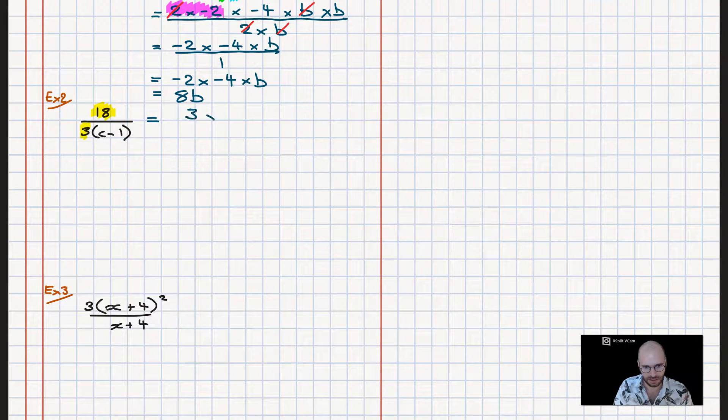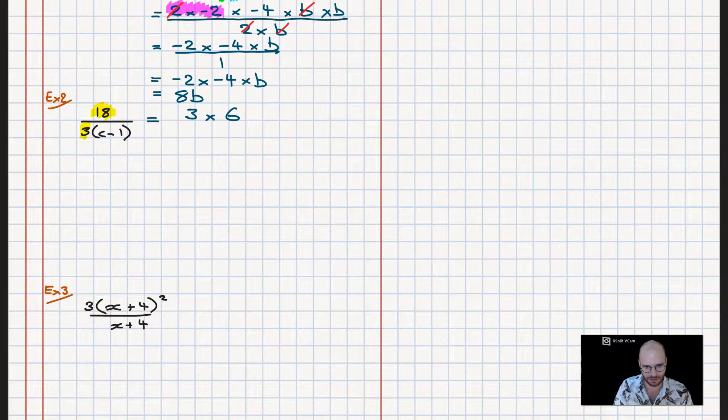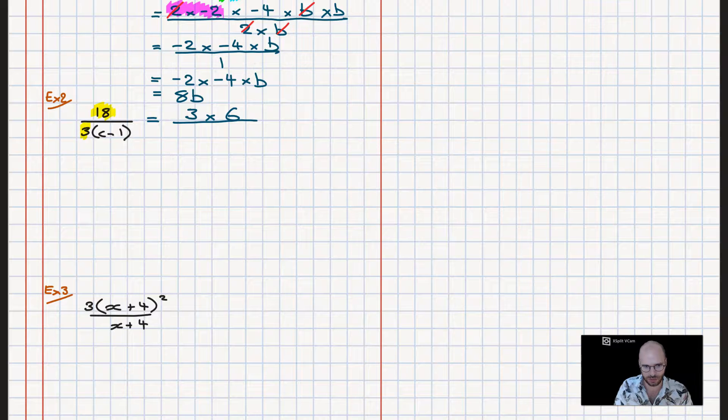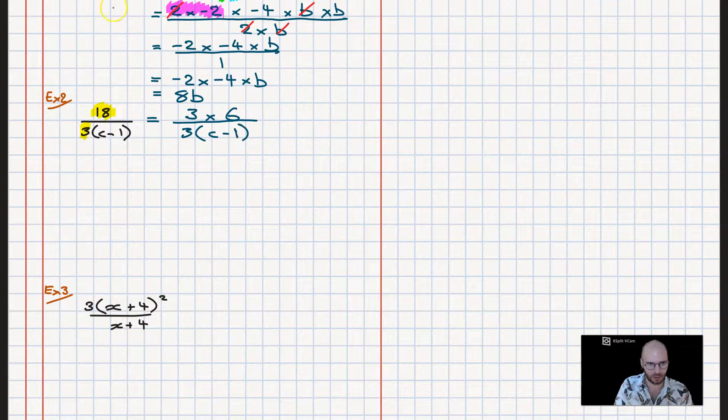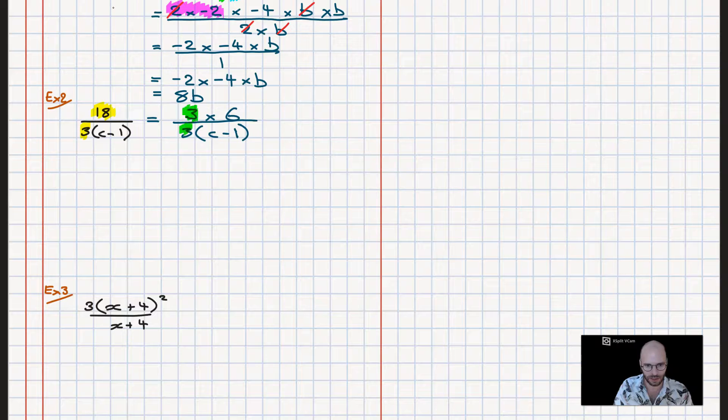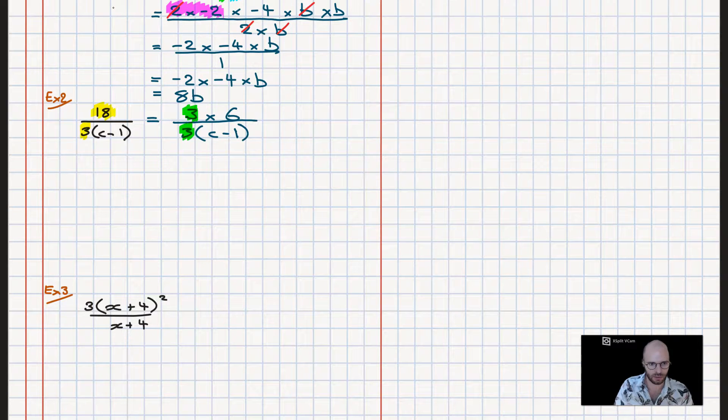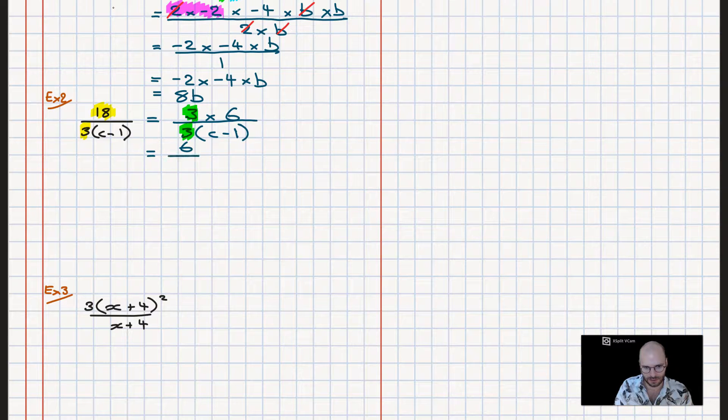It goes 3 times 6, so 3 times 6 is 18. Therefore downstairs we have 3 and c minus 1. Now we look, what is common between the two? We have one 3 here and one 3 there, so the 3s are going to disappear and we're going to be left with 6 over c minus 1.